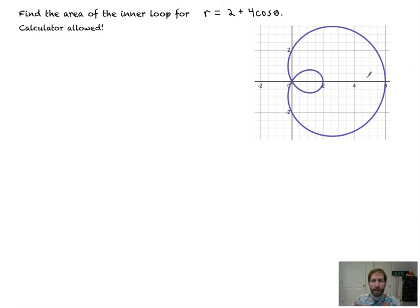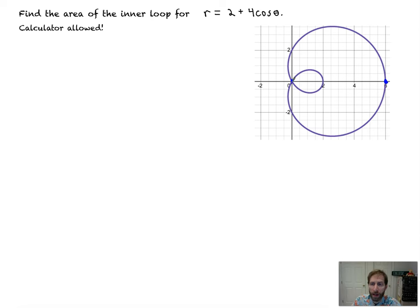The curve starts at theta equals zero, and when we trace all along here, we'd be finding the area of a sector that overlaps some of what we want but doesn't give us what we want. So we have to wait until we enter the inner loop, trace it out — that's the area we want. We need to know when we start entering the inner loop and when we're halfway through, then we can double it, or go all the way through. I like to do half the inner loop and then double it.